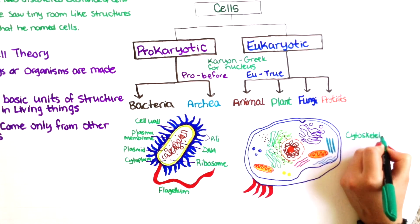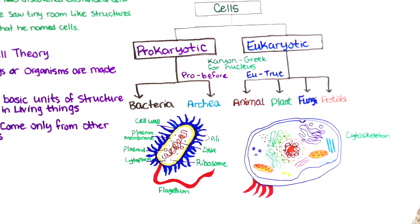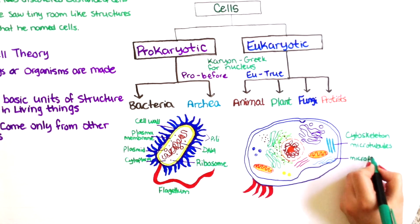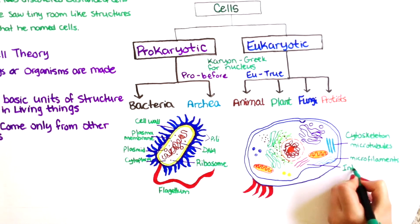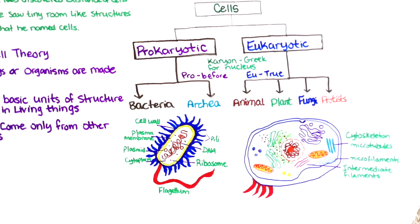The cytoskeleton is a series of intracellular proteins that help a cell with shape, support, and movement. The cytoskeleton has three main structural components: microtubules, microfilaments, and intermediate filaments. The cytoskeleton mediates movement by helping the cell move in its environment and mediating the movement of the cell's components.